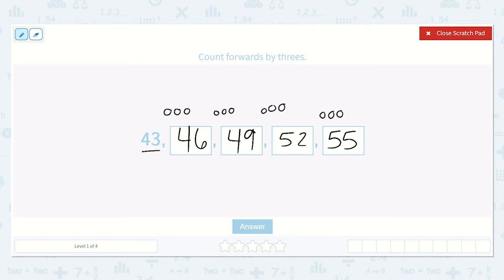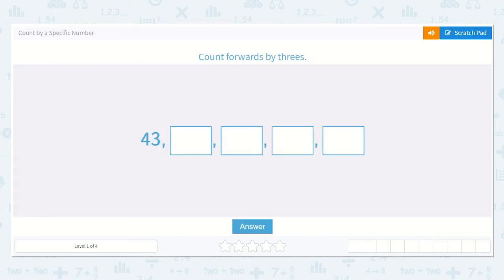So this is how we count forwards by three. 43, 46, 49, 52, 55. Great job.